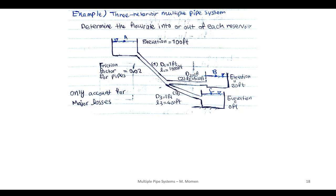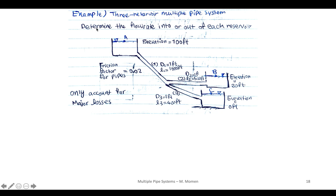Today we continue our discussion about multiple pipe systems. This is our last session where we solve an example about a three-reservoir multiple pipe system introduced last session. We have three reservoirs: the first at 100 ft elevation, the second at 220 ft, and the third at zero ft. We only account for major losses. The friction factor for all pipes is 0.02, the diameter is 1 ft, and the pipe lengths are 1,000 ft, 500 ft, and 400 ft respectively.